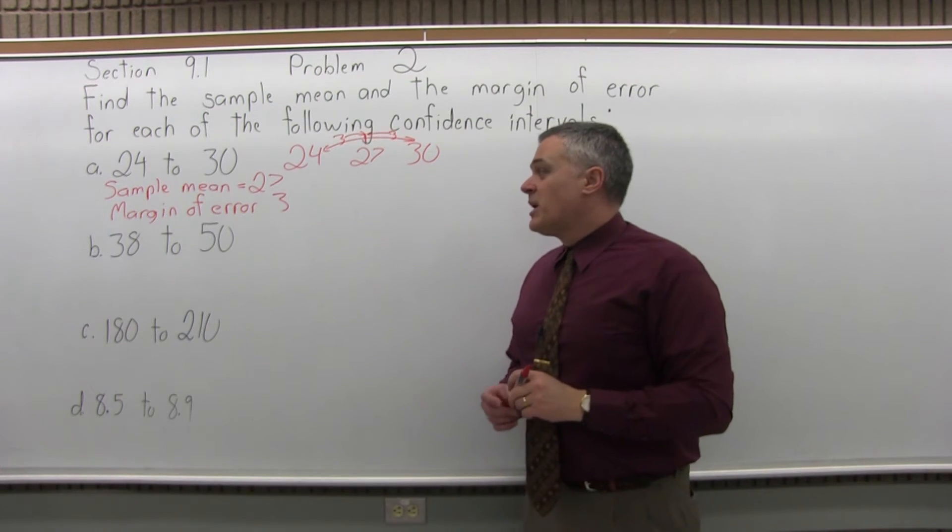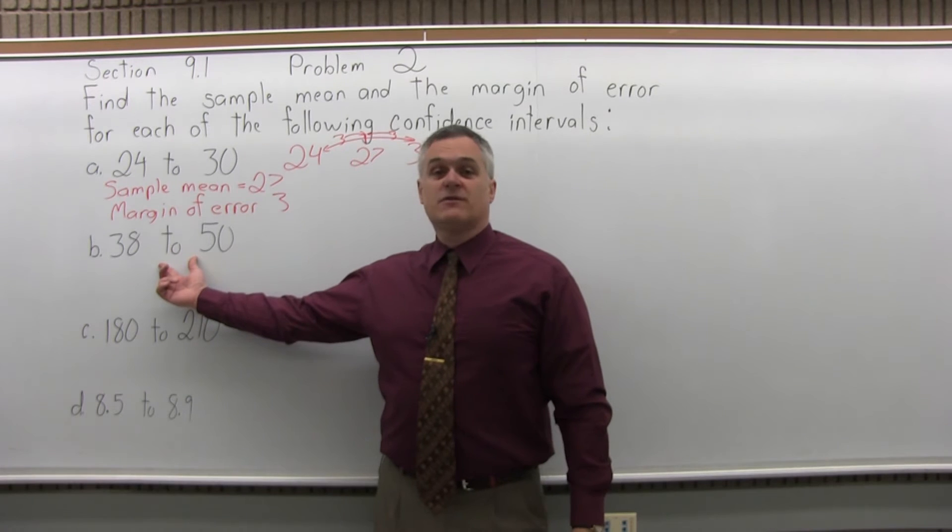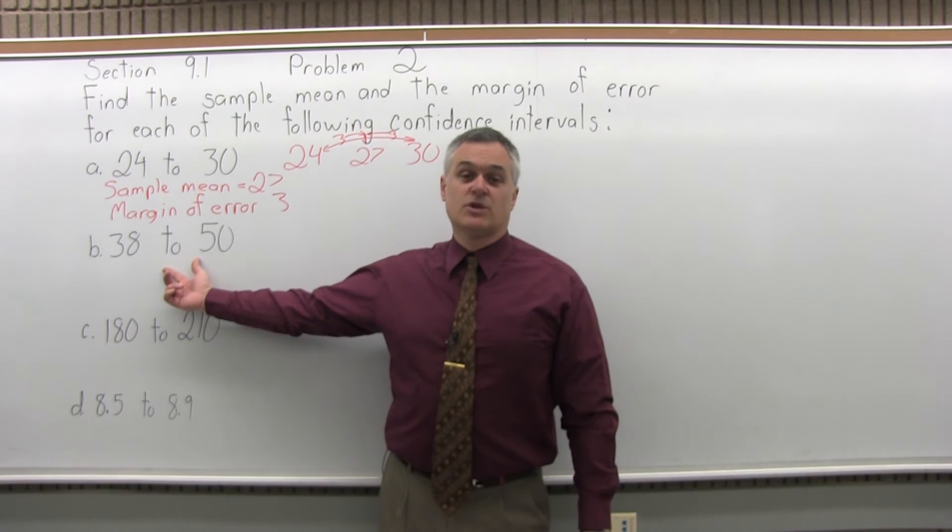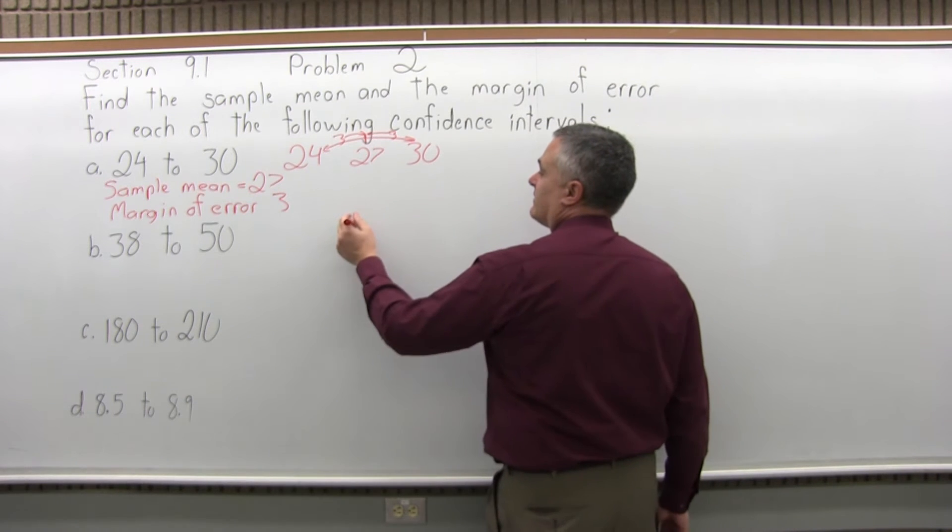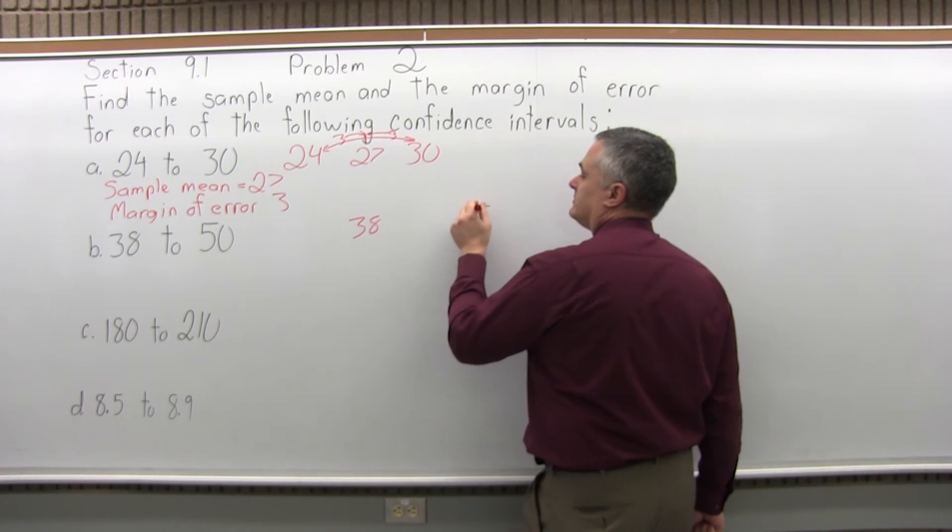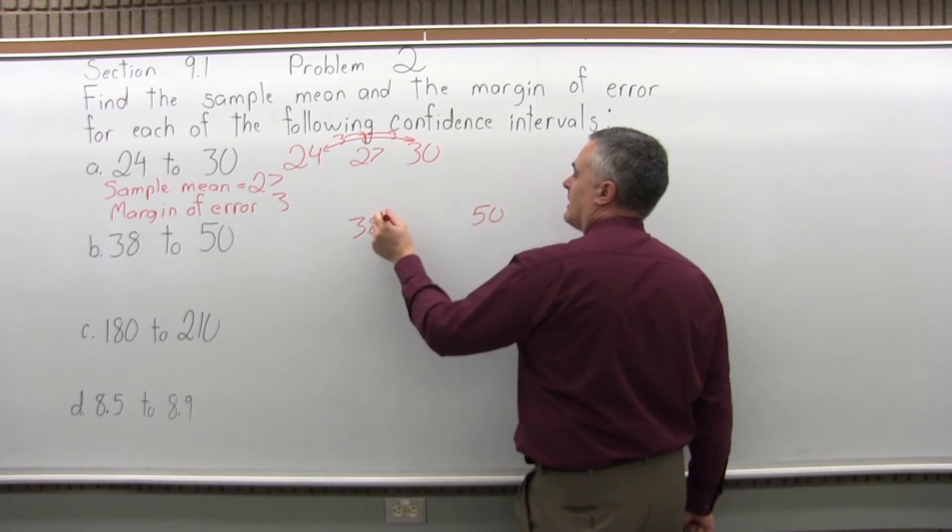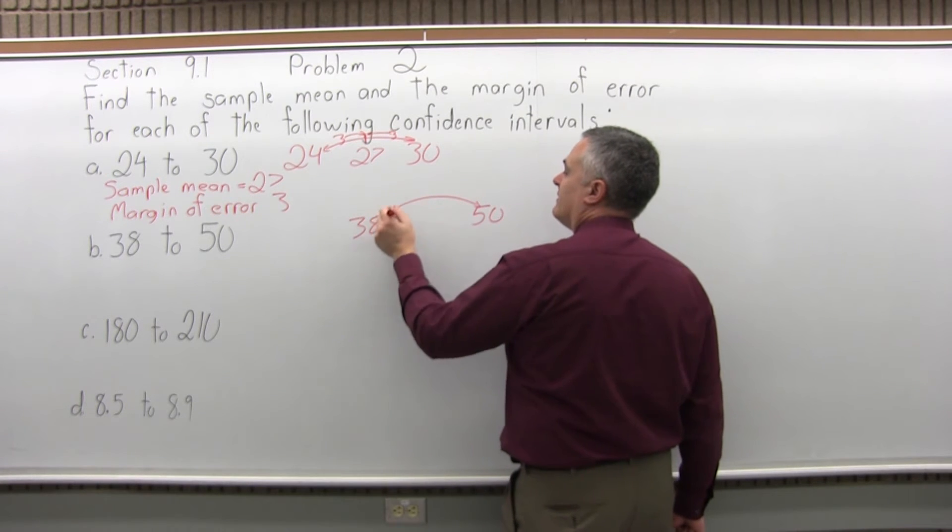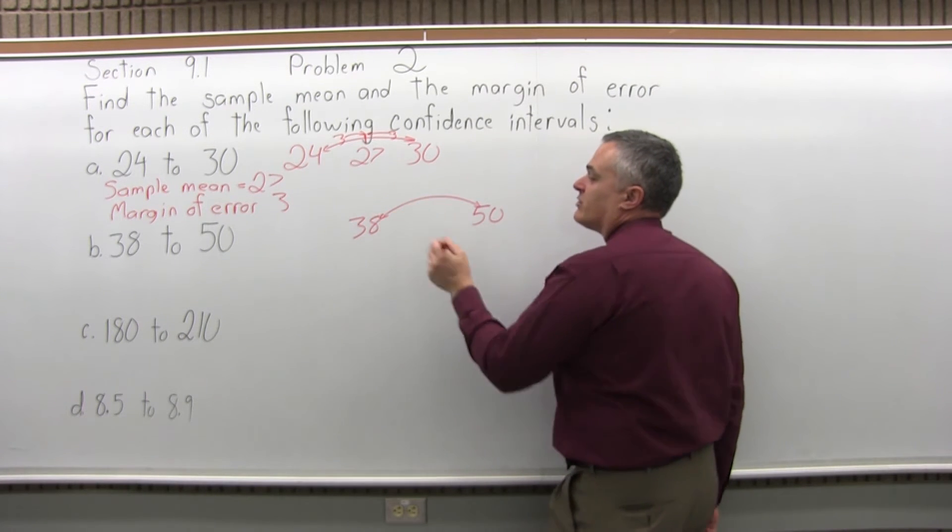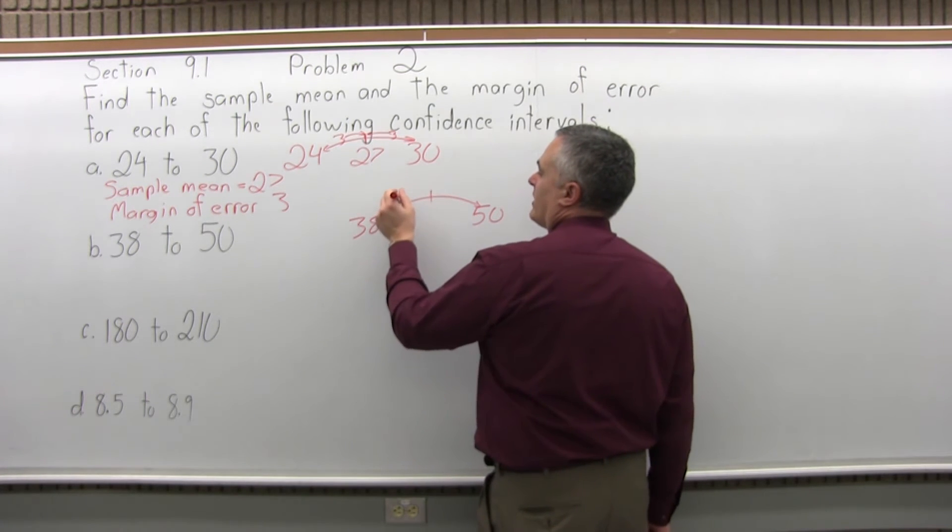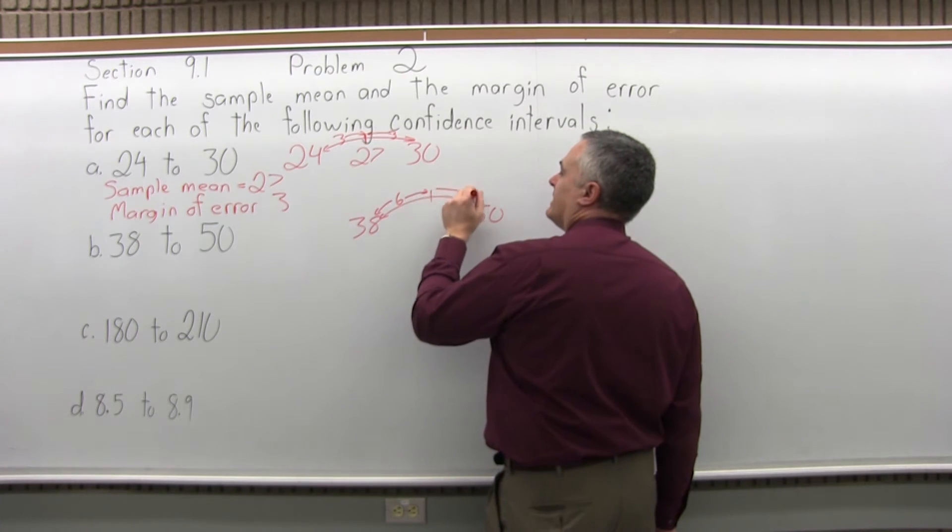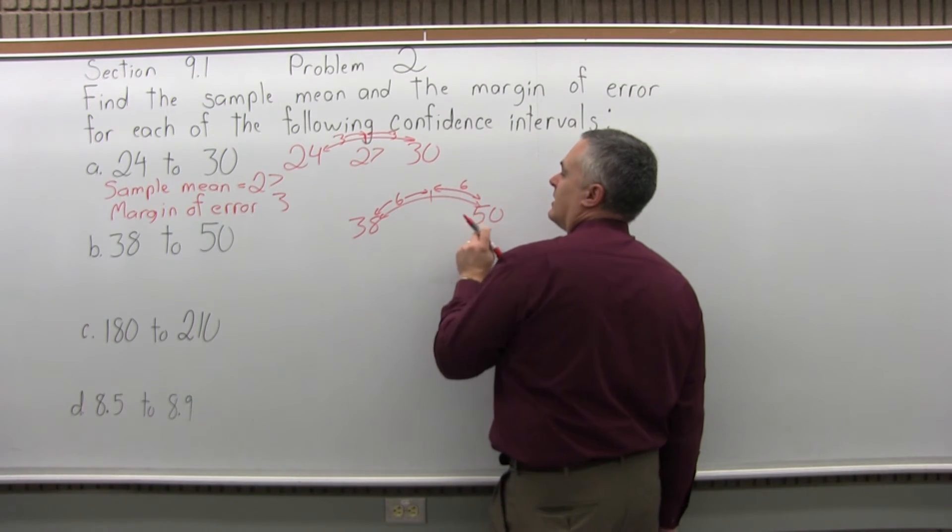So now for part B it's a similar process. From 38 to 50 that's your confidence interval. So what's the sample mean and the margin of error? So again picture that 38 to 50 on a number line. So to go from 38 to 50 there's a distance altogether of 12. So the halfway point occurs 6 bigger than the low end and 6 less than the upper end.